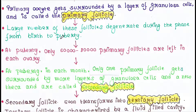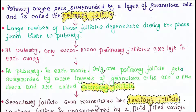A large number of these follicles degenerate during the phase from birth to puberty. At puberty, only 60,000 to 80,000 primary follicles are left in each ovary. At puberty, in each month, only one primary follicle gets surrounded by more layers of granulosa cells and a new theca, and they are called the secondary follicle.